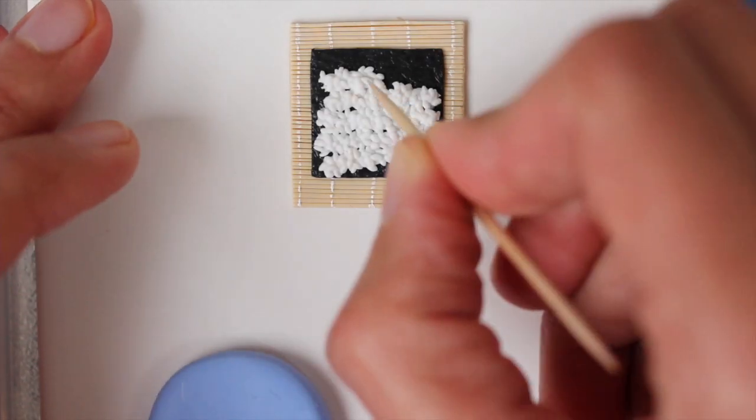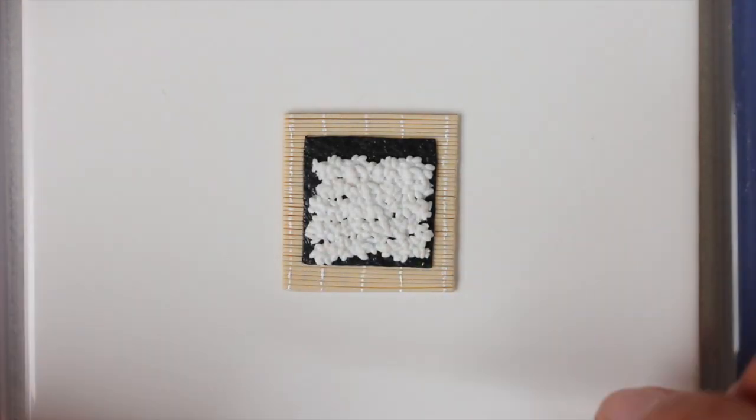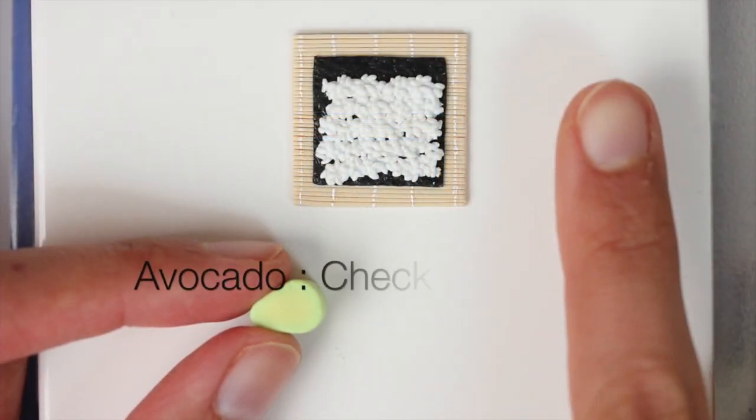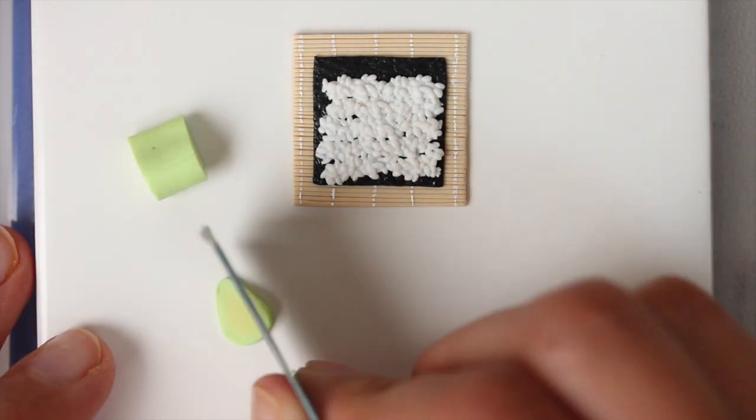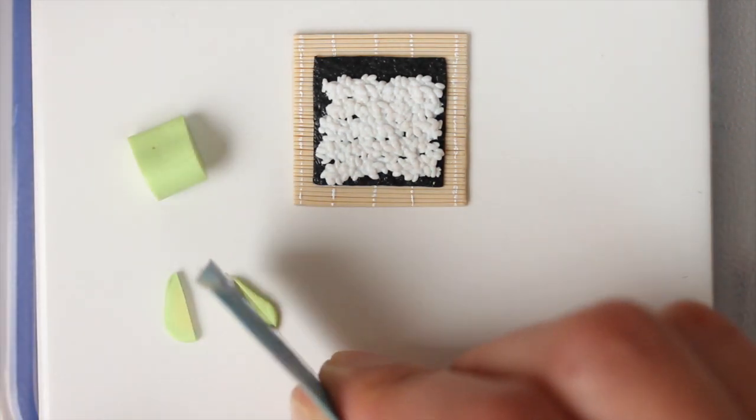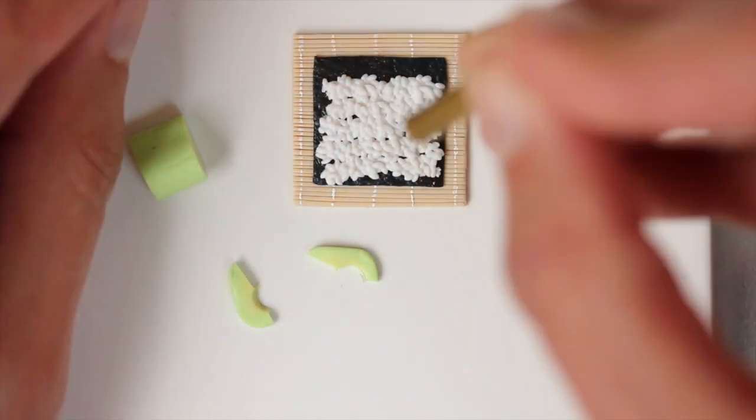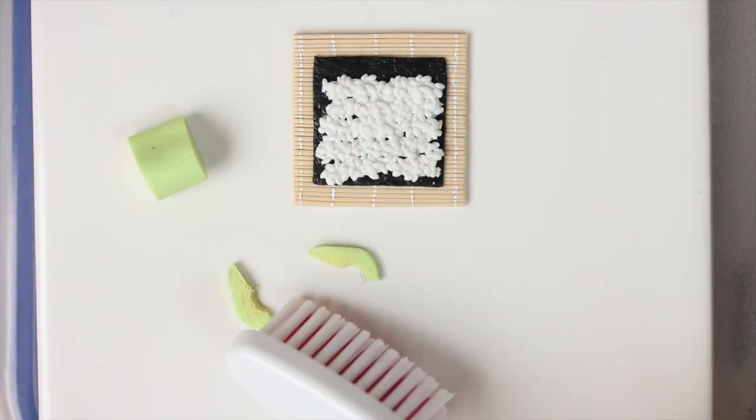Then I just cut out a little bit from the sushi mat because I thought it was just too big. For the avocado, please check the link for the whole tutorial because I was too lazy to redo it. I had some scrap avocado.